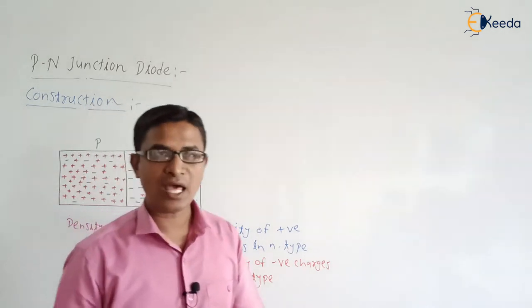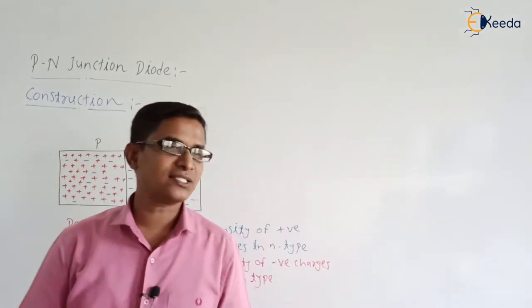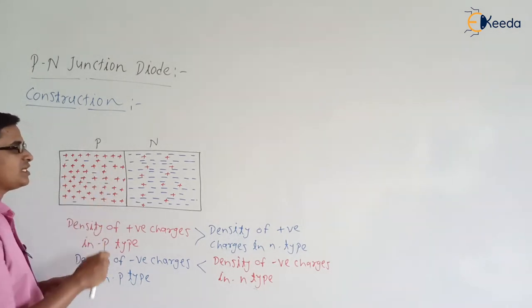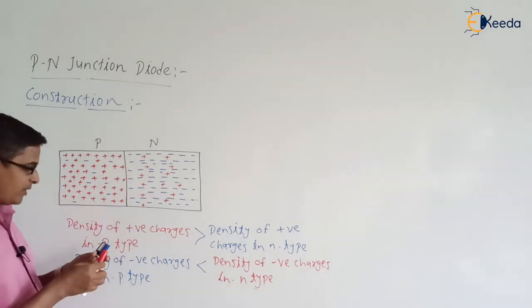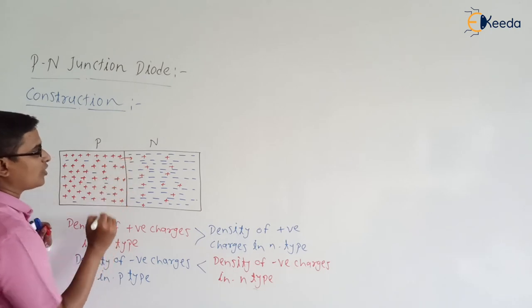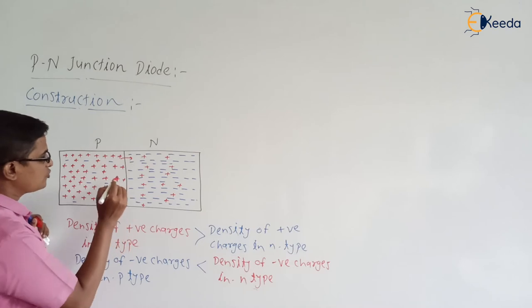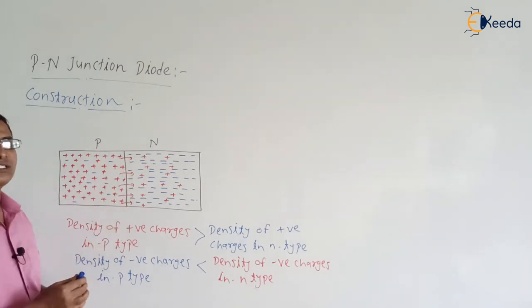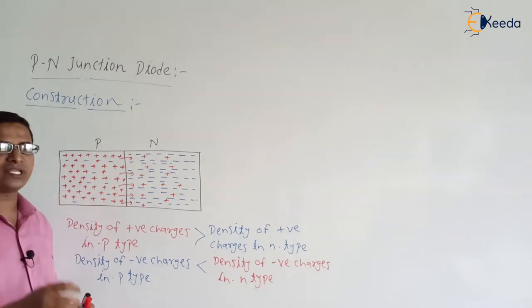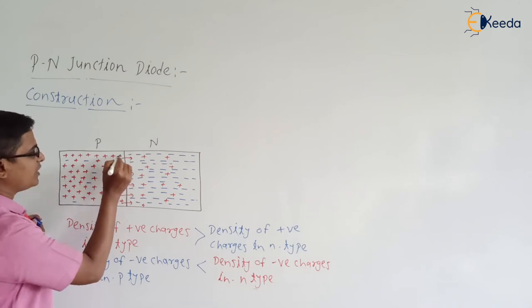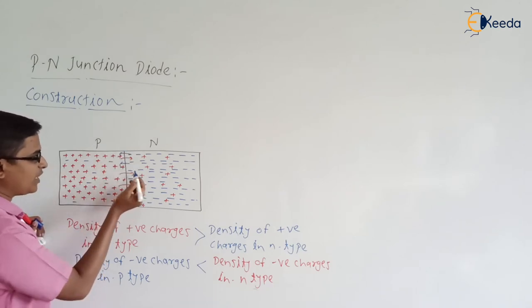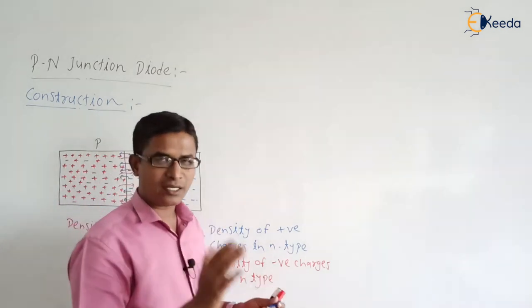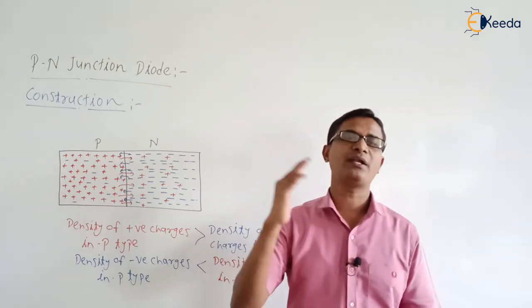These are the materials we have, and now we are connecting these two materials. As soon as these two materials are connected together, since there is a large number of positive charges in P-type and very small number in N-type, the positive charges from P-type material will try to cross the junction and move towards the N-type material. Similarly, since the density of negative charges is high in N-type and very less in P-type, the negative charges from N-type will try to cross the junction and enter into the P-type material. So negative charges move from N-type to P-type and positive charges move from P-type to N-type.